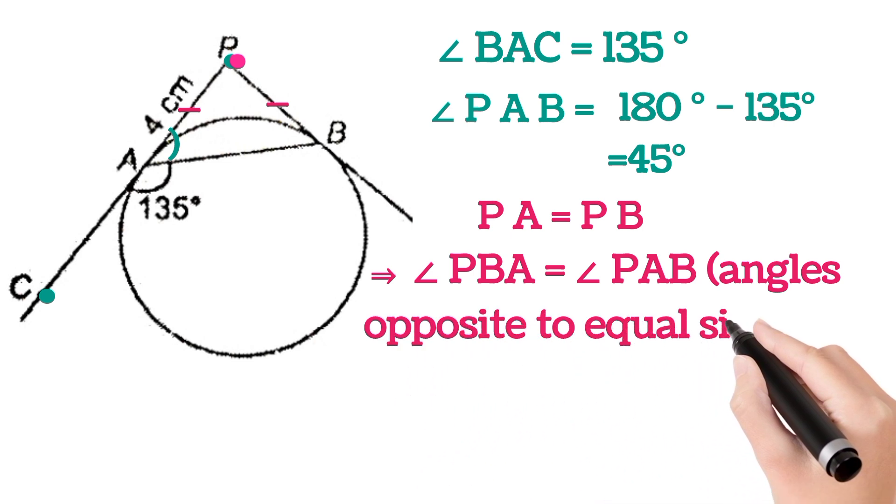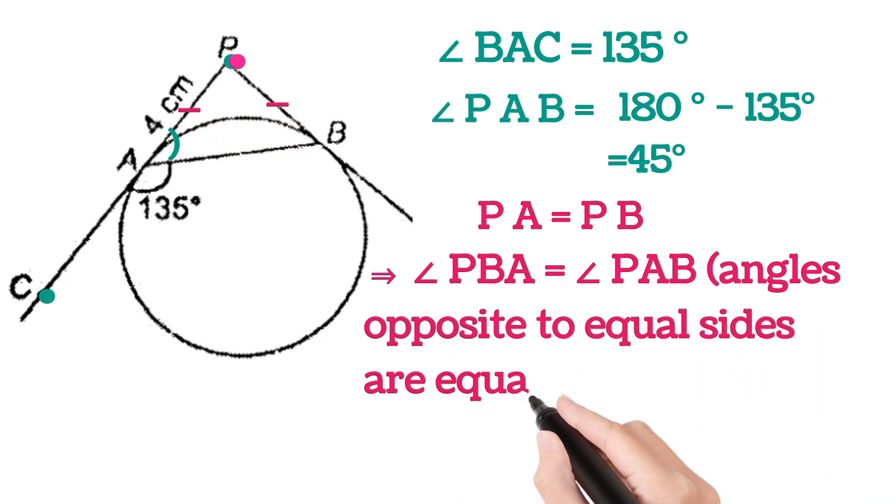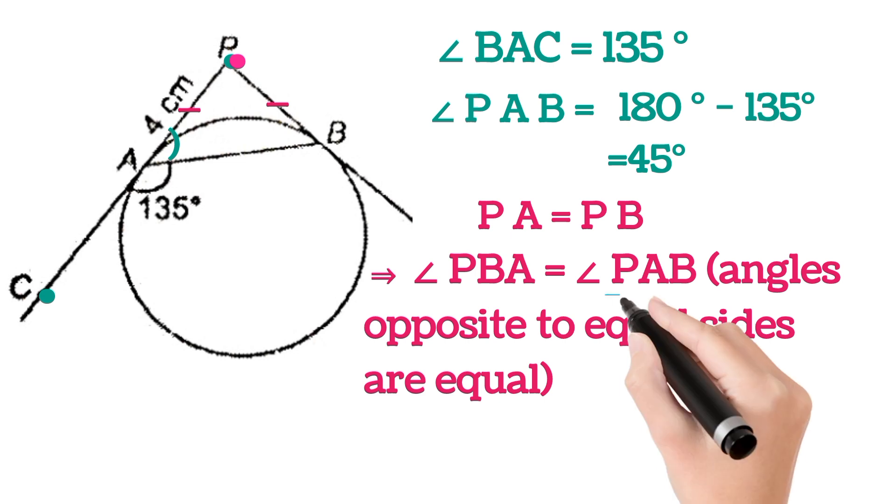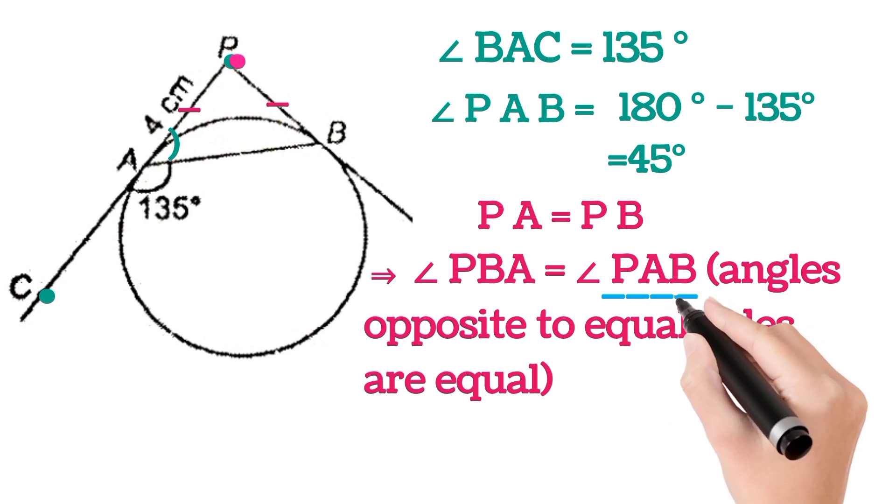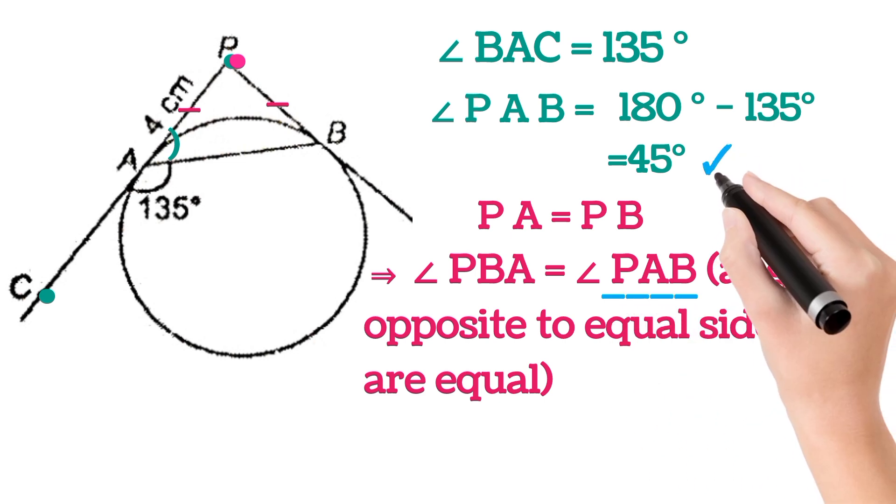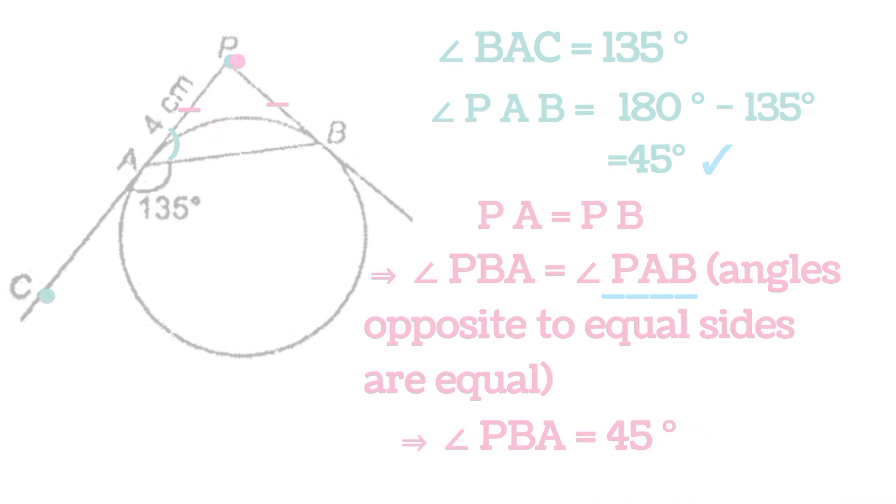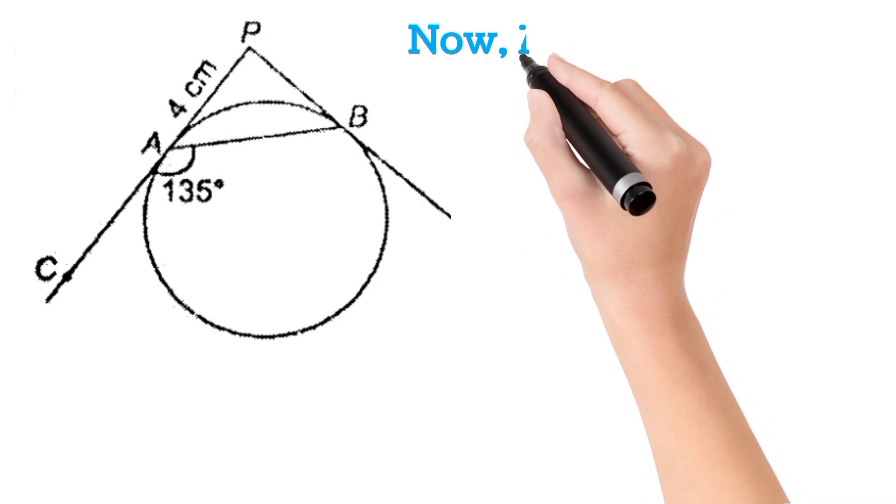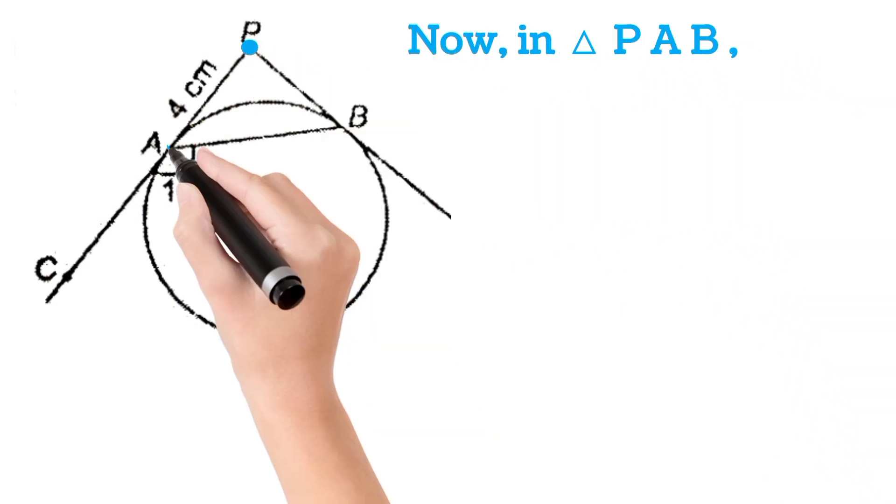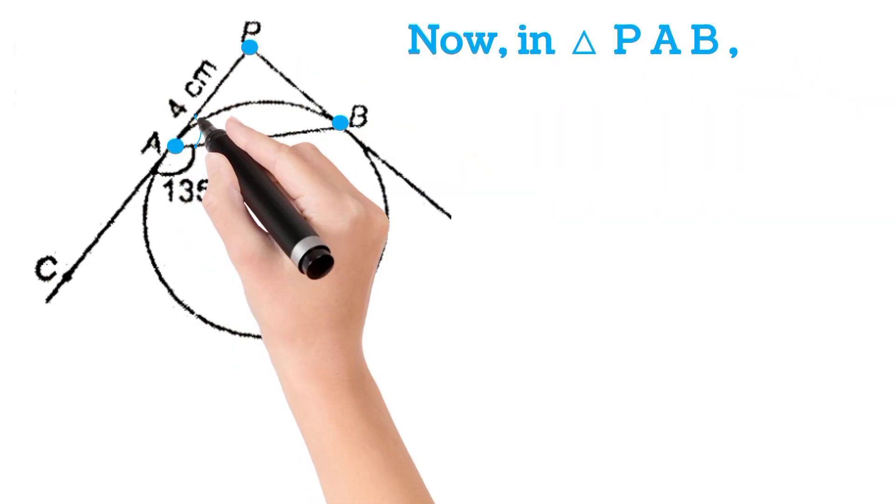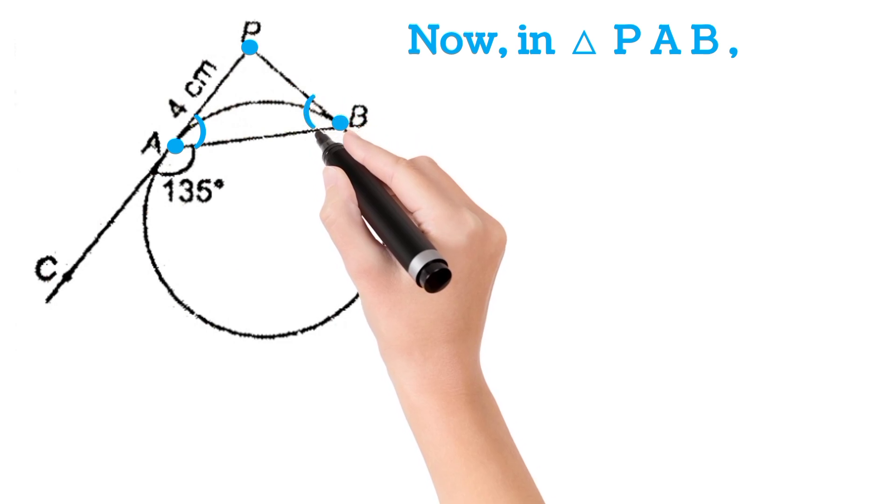Now angle PAB is 45 degrees, so angle PBA will also be 45 degrees. So let us take the figure again. In this figure triangle PAB, this angle is 45, this angle is 45.